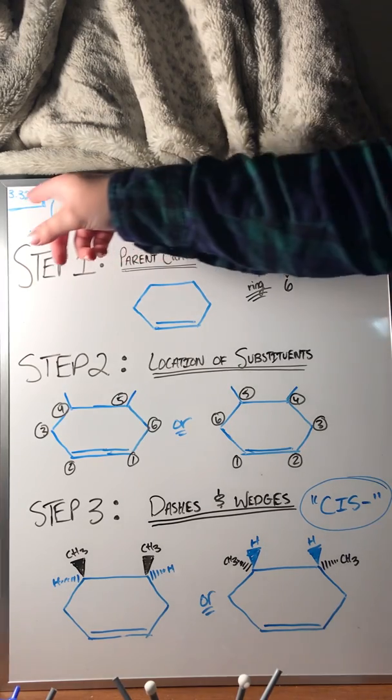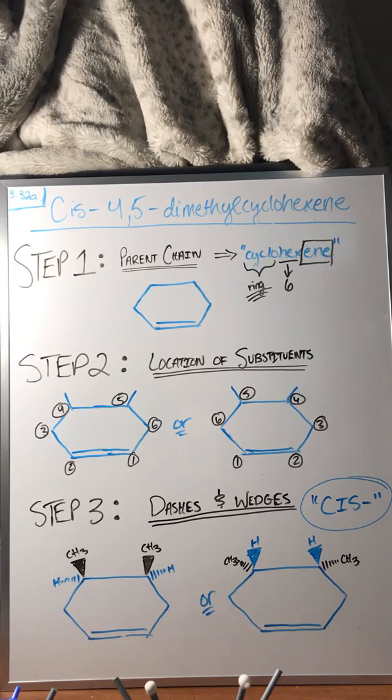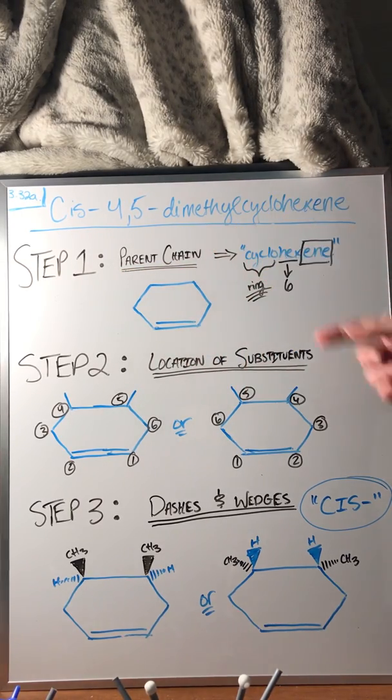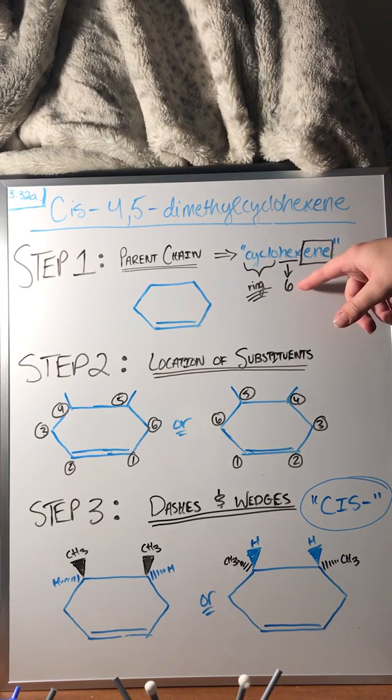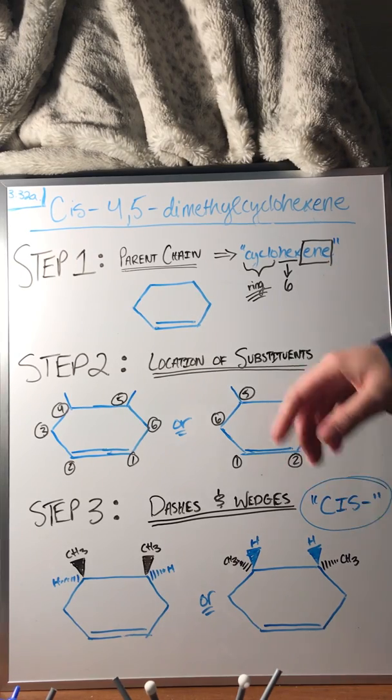This is problem 3.32a and we're going to be starting first with the parent chain which can be found at the end of the name. Cyclo tells us that it's going to be in a ring. Hex tells us there's going to be six carbons in the parent chain. The -ene suffix tells us there's going to be one double bond.